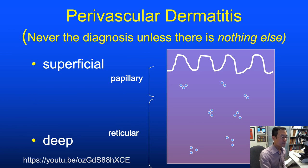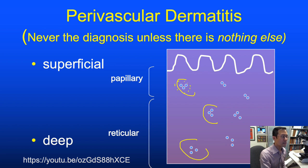Two topics were covered in the previous session: perivascular dermatitis with minimal or absent epidermal changes, spongiotic dermatitis, and interface dermatitis. The least common denominator for inflammation in the skin is perivascular inflammation—all other patterns stem from additional changes beyond just perivascular inflammation.